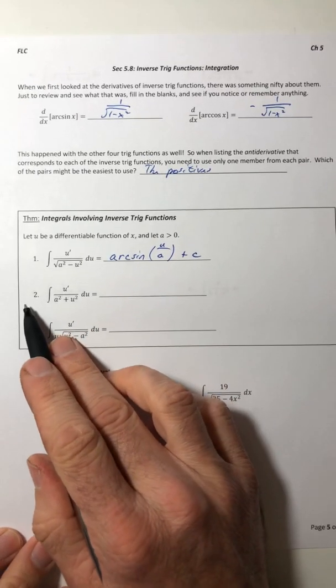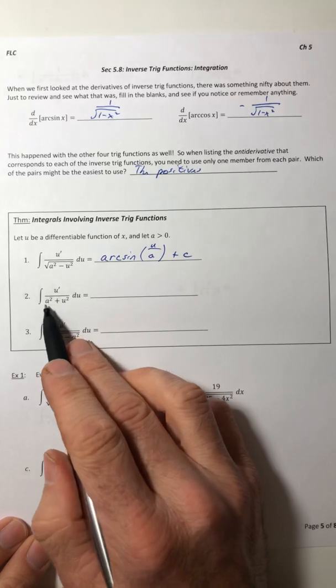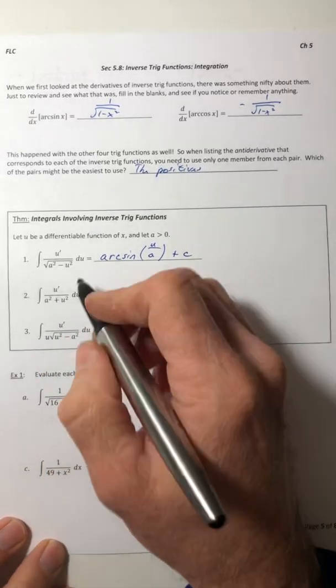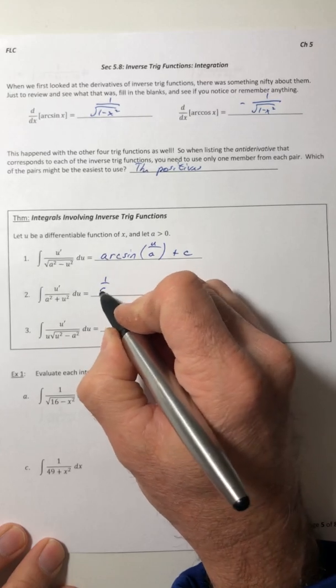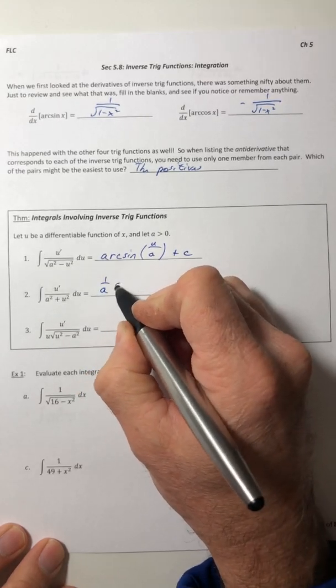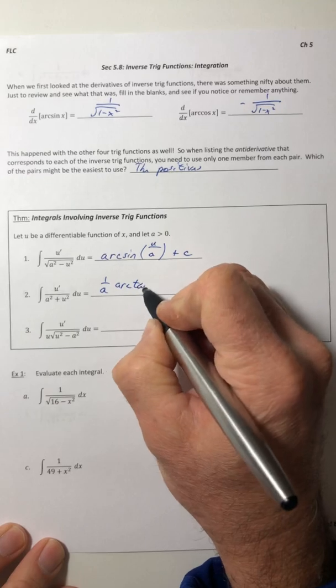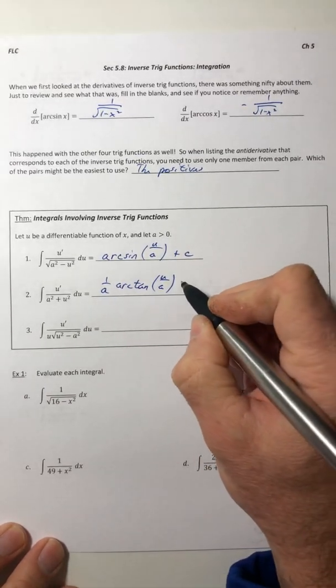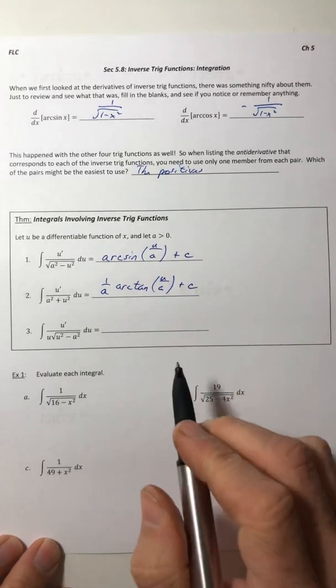Second one, u prime over a squared plus u squared. No radical down there. It integrates into 1 over a, arc tangent of u over a plus c.